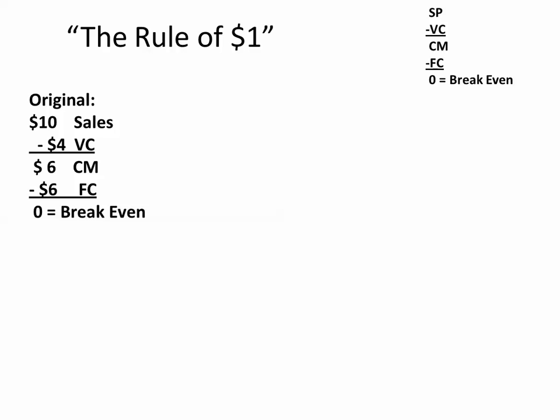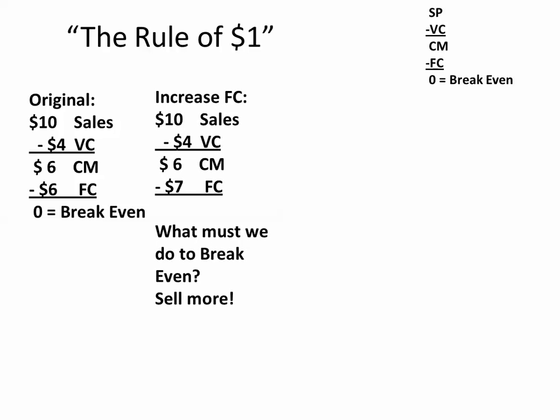We're selling ten units, variable costs are forty cents each — four dollars total. The contribution margin per unit is sixty cents, and fixed costs equal six dollars, so we start at break-even. If I increase my fixed costs, our sales are still ten dollars, variable costs still four dollars, contribution margin still six dollars — but six dollars minus seven dollars of fixed costs won't let us break even. So we need to sell more units; our break-even point in units went up.